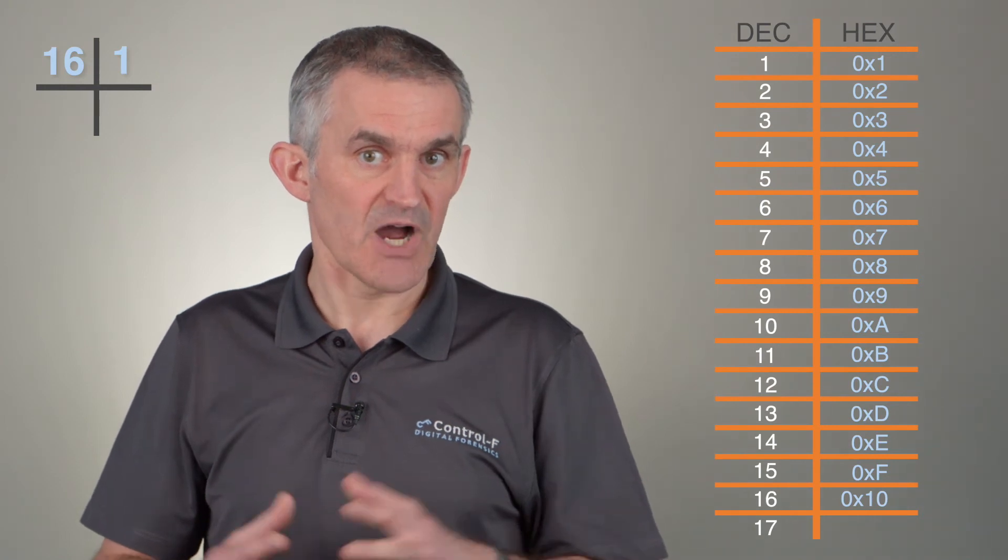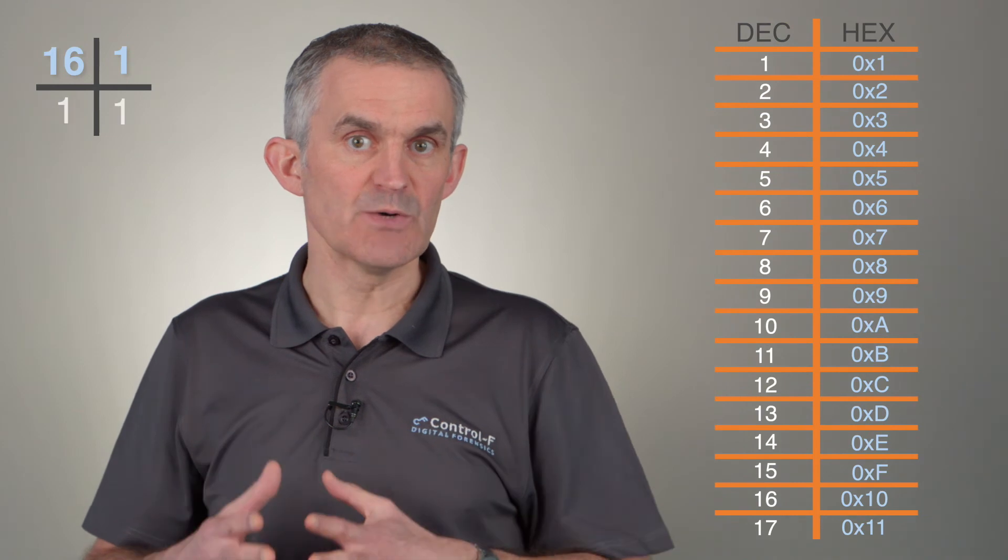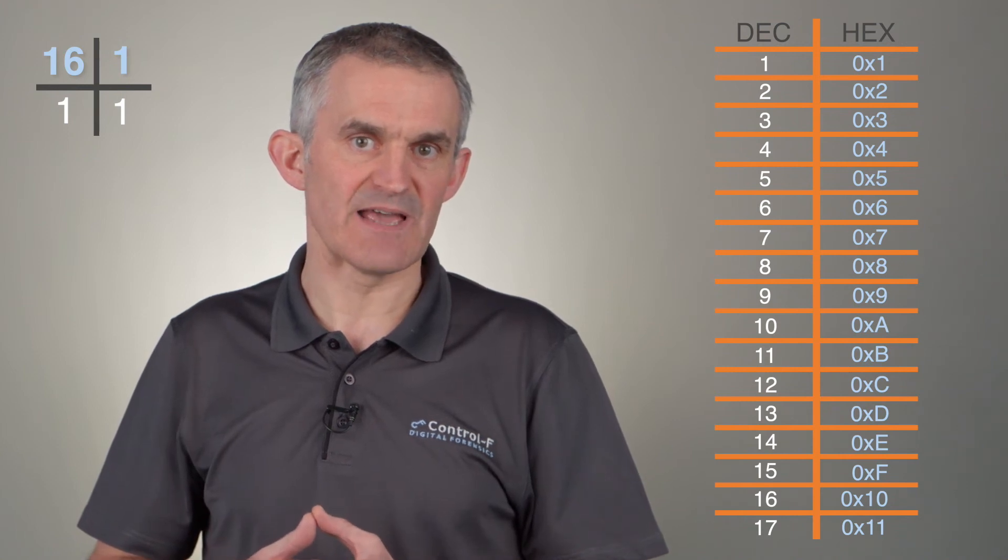Now let's consider decimal 17. What combination of 16s and 1s do we need to make 17? The two-digit hex number 1-1 gives us one 16 plus one 1, which is 17 in total. Again, we say hexadecimal 1-1, not hexadecimal eleven.